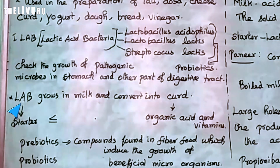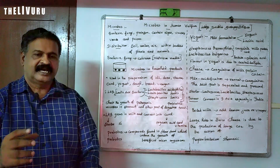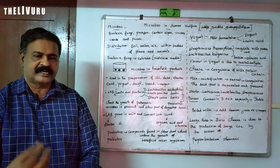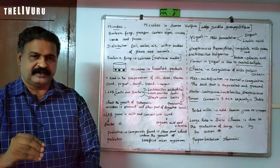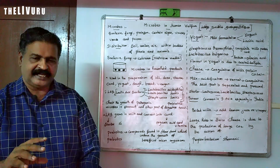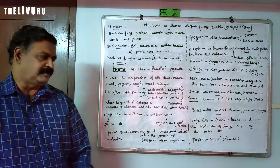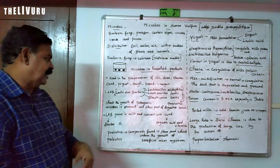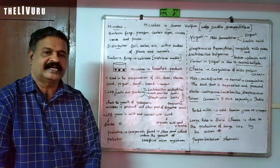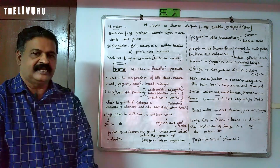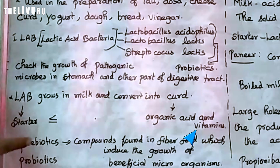This lactic acid bacteria will convert the milk into curd. In the milk we will add a starter — a starter is a small amount of curd or buttermilk. That bacteria will multiply and react with the milk, it will be fermented. Lactic acid will be formed, and lactic acid causes the milk to become curd. The LAB grows in milk and converts it into curd.